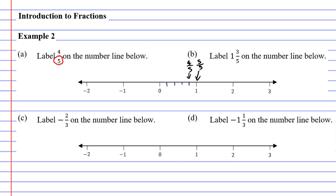Alright let's do question B now. It wants you to label 1 and 3 fifths. Okay so what I'm going to do is I'm going to draw 4 lines again, this time between the 1 and the 2. One, two, three, four. Okay and 1 and 3 fifths is the third line in.